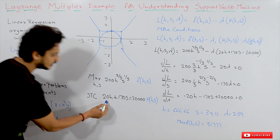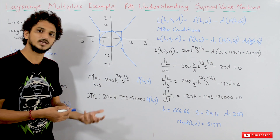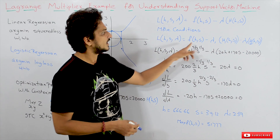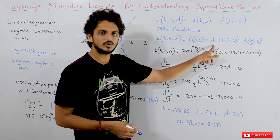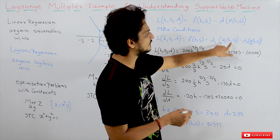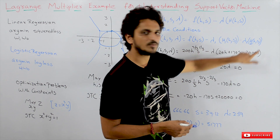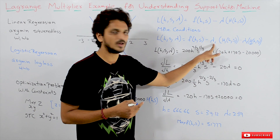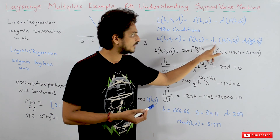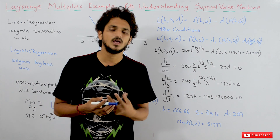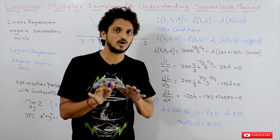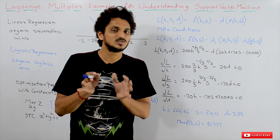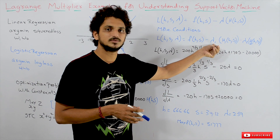Here we are taking only one condition, but if we have two conditions, the Lagrangian becomes: optimization function − λ₁·g₁(h, s) − λ₂·g₂(h, s). For each conditional function we have to give a lambda value — that is the Lagrange multiplier. If you are having 10 conditions, you will get 10 lambda values. This is an important point, because in support vector machines we use around 1 lakh conditions — so we use 1 lakh lambda values.